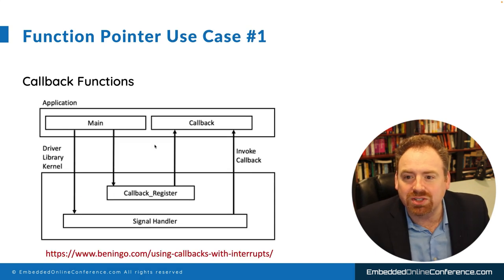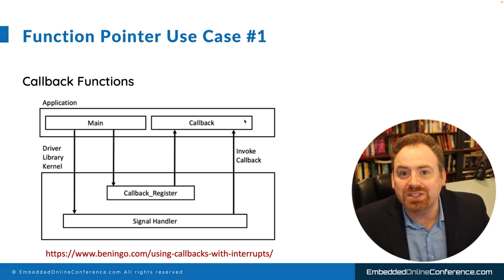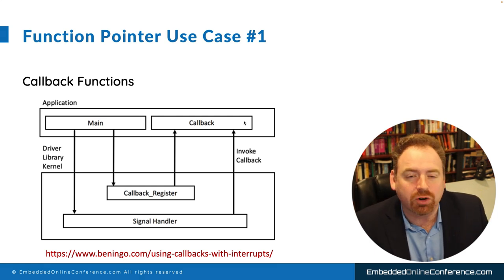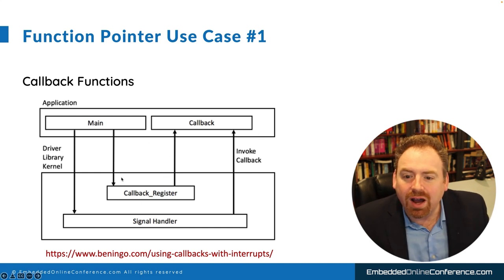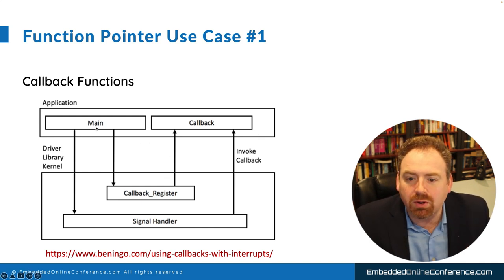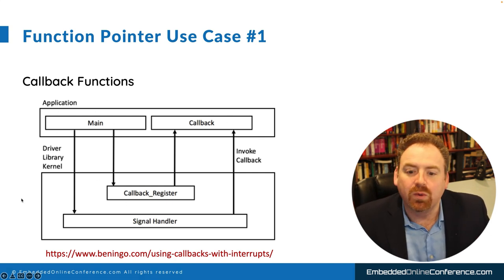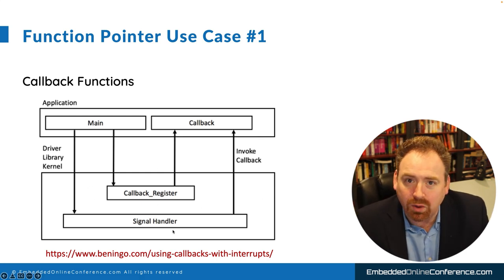So let's take a look at a couple of these use cases. First of all, function pointers can be used for callback functions. A callback function basically allows you to assign a different function that will be called based on what the application needs to do. The safe way to do this is to statically, or at compile time, decide what function you're going to use. You could also do it dynamically during runtime. In this example, we have an application layer here and a driver layer or kernel — this is probably pre-compiled and we can't change its behavior.